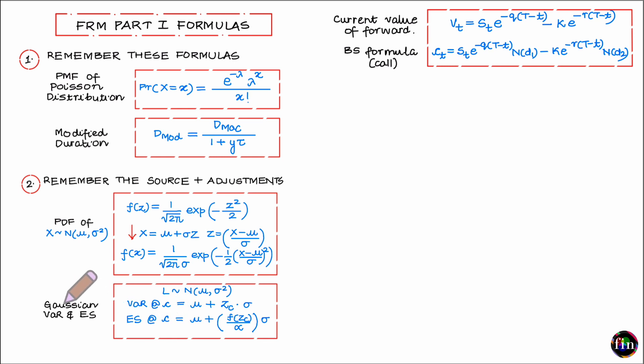So the adjustments required are replace z by this guy, divide by sigma to take care of the difference in the widths. Then let's take a look at another example.